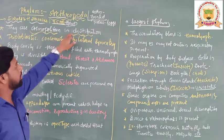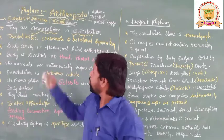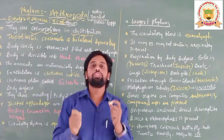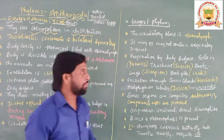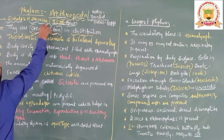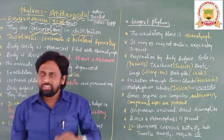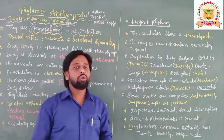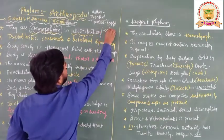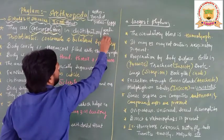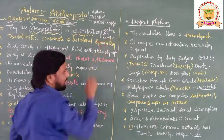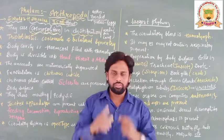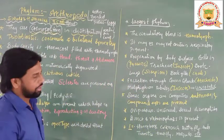Arthropoda animals are cosmopolitan in distribution. Cosmopolitan means the animals which show a variety of habitats. These animals can be seen in water, in air, and on land — every place on earth. That is the reason they are commonly called cosmopolitan.